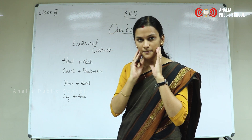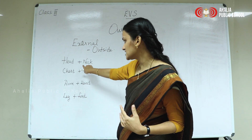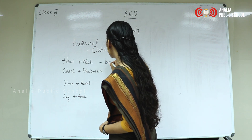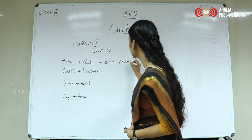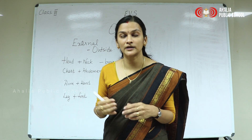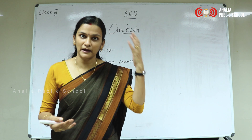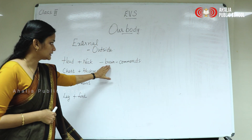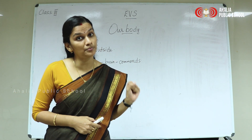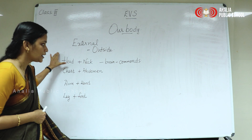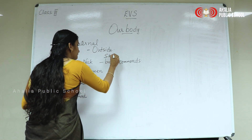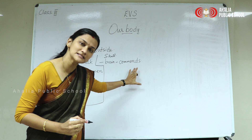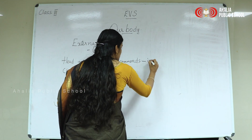The head is the topmost part of the body, attached to the neck, which helps you turn around or look in different directions. Inside the head you have the brain which gives commands — commands means instructions. When I am teaching, my brain is continuously giving me instructions about what to say and which examples to mention. The brain is one of the most important parts of your body, protected inside the skull. Here you focus on the external part; I mentioned the brain because it gives commands or instructions to be followed.